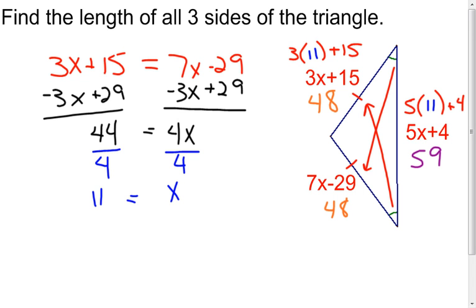The labels on this would be units. And being I didn't give you a label, I'm fine if you want to leave it off. Otherwise, 48 units, 48 units, and 59 units. There's a couple examples using the isosceles triangle theorem and the converse of the isosceles triangle theorem.